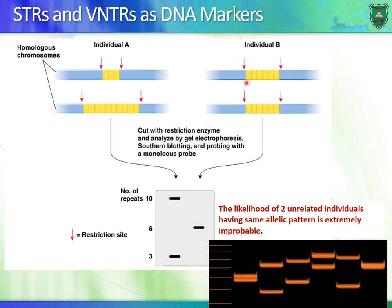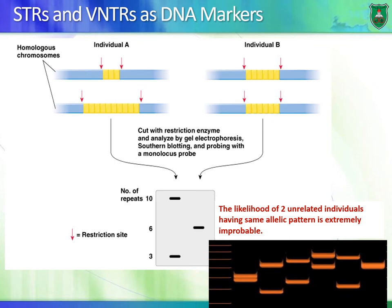For individual B, on homologous chromosomes, the same exact sequence exists at the same location on the same chromosome, except the number of repeats is different — on both chromosomes you have 6 repeats rather than 3 or 10. Looking at these different individuals and a certain VNTR or STR, you can see how each individual has their own molecular pattern — this is known as molecular profiling or fingerprinting.